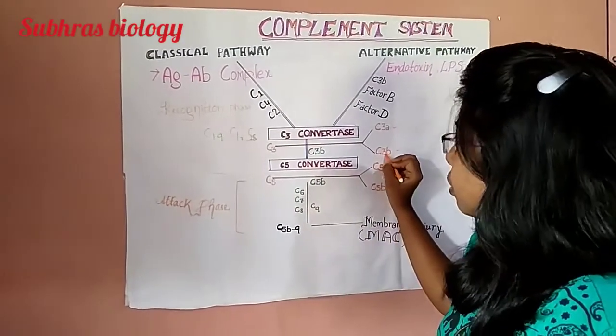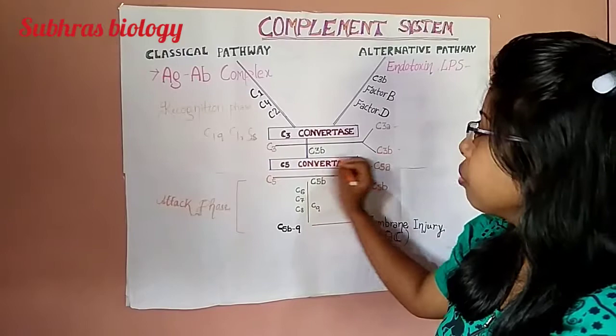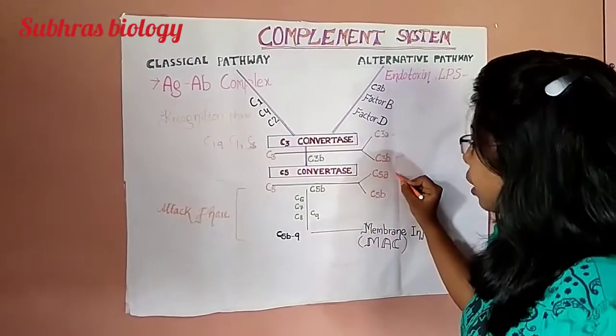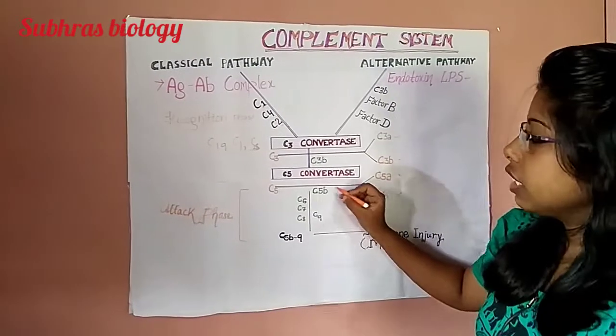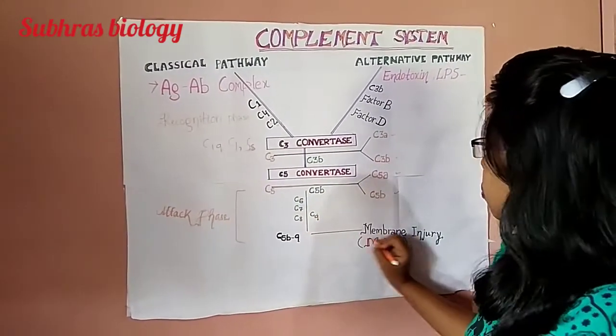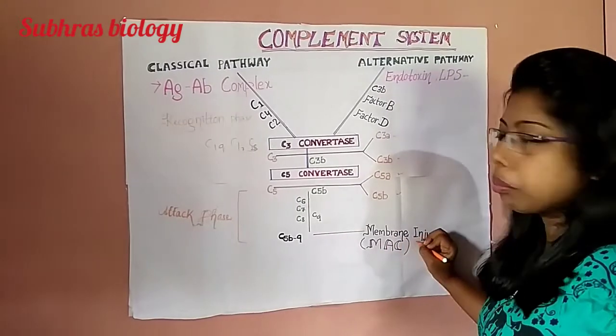Next, when it is attached with C3B, it forms C5 Convertase. And C5, when it splits into C5A and C5B, then it attaches with C6, C7, C8 and C9 to form membrane injury or the membrane attack complex.